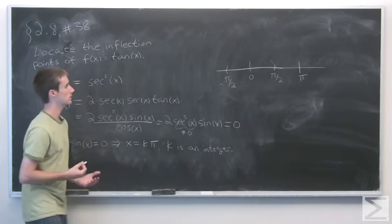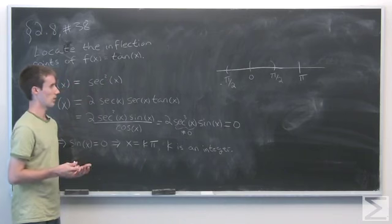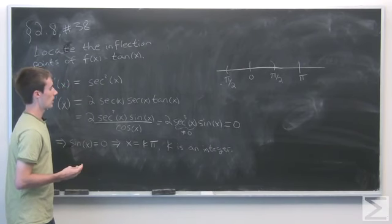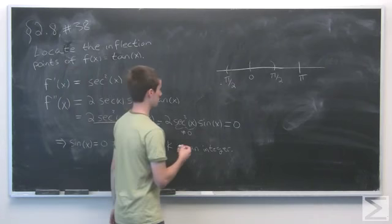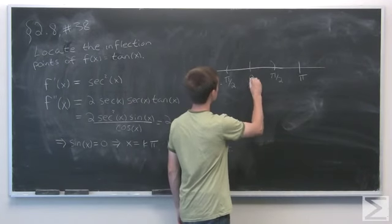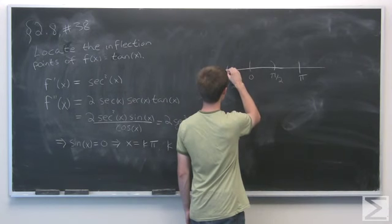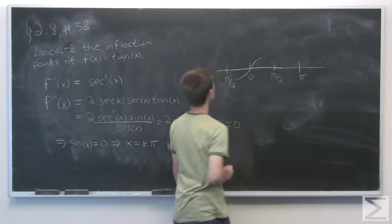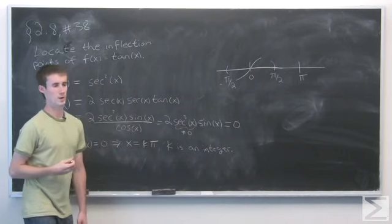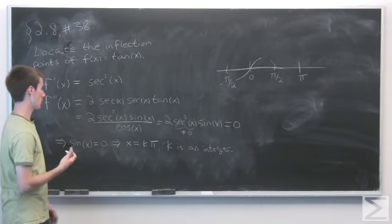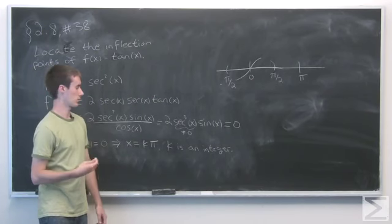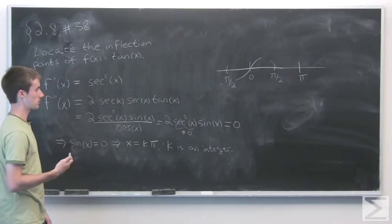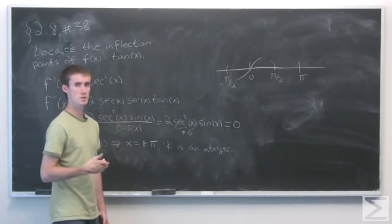So really we only need to look at values of x for which sin of x changes sign. Well, we know that sin of x is 0 at these points, and we know that the graph of sin coming through here does go from negative to positive. So at the points, at the integer multiples of pi, we see that the sin of x does change sign.